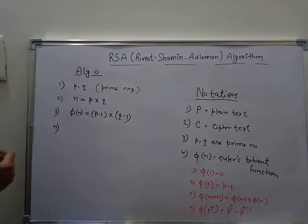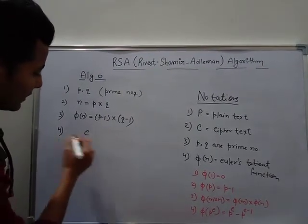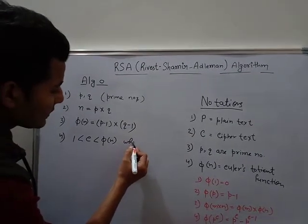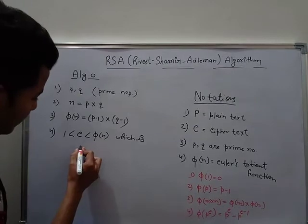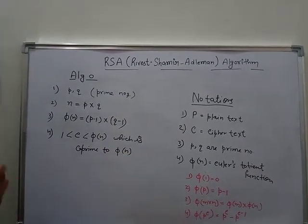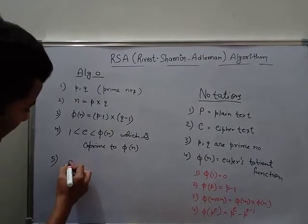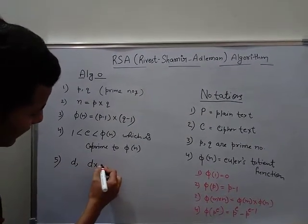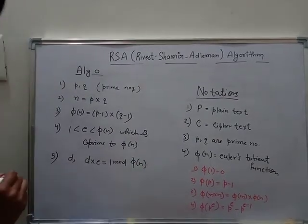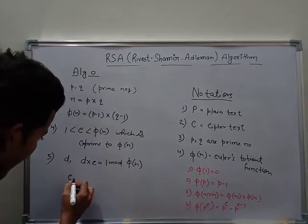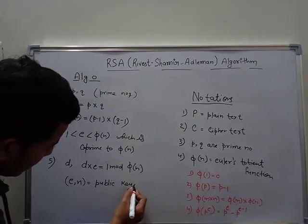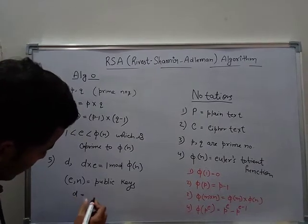The fourth step is we calculate a variable E which is less than phi of N and greater than 1, and which is coprime to phi of N. Then, the fifth step, we calculate a variable D such that D times E equals 1 mod phi of N. Here E and N are the public keys, and D is the private key.